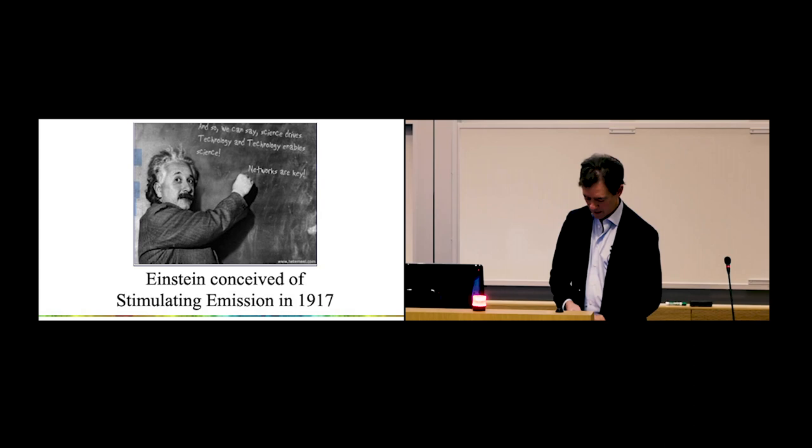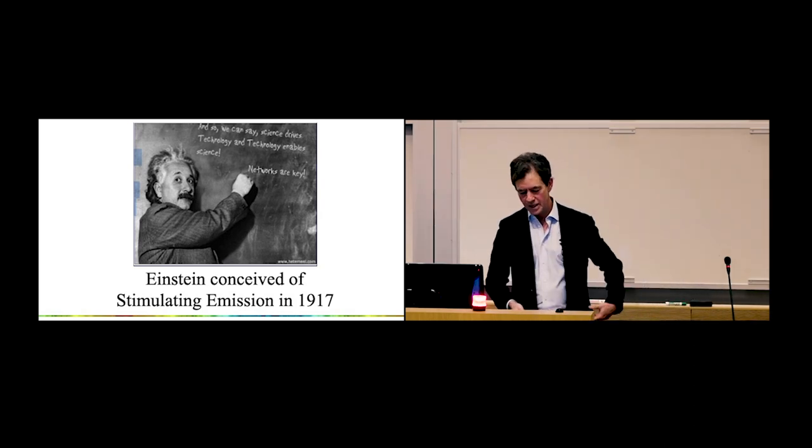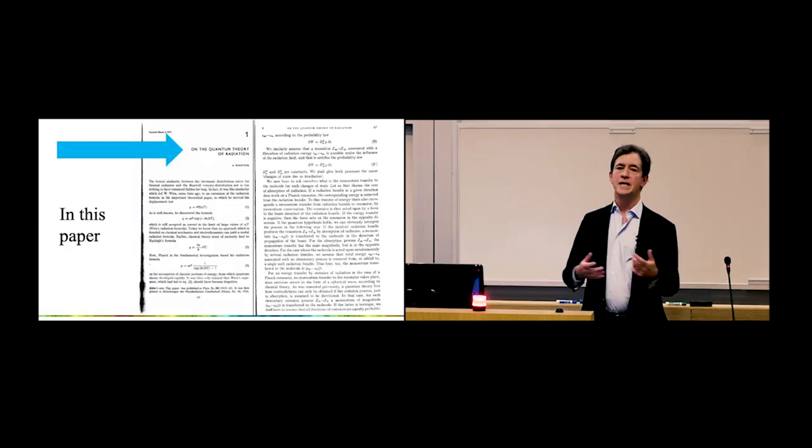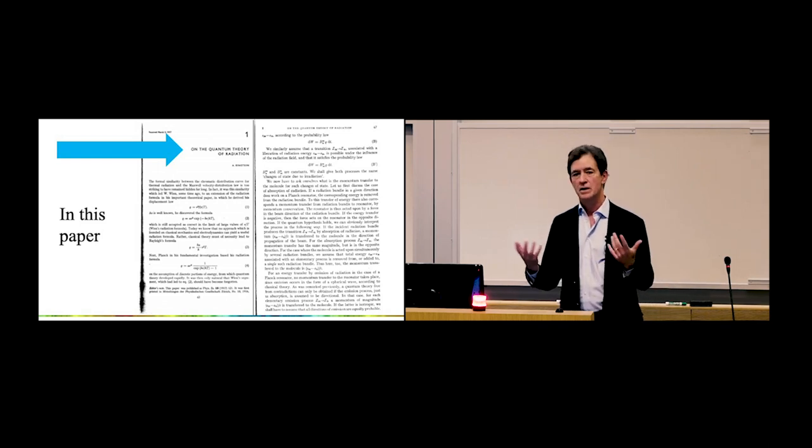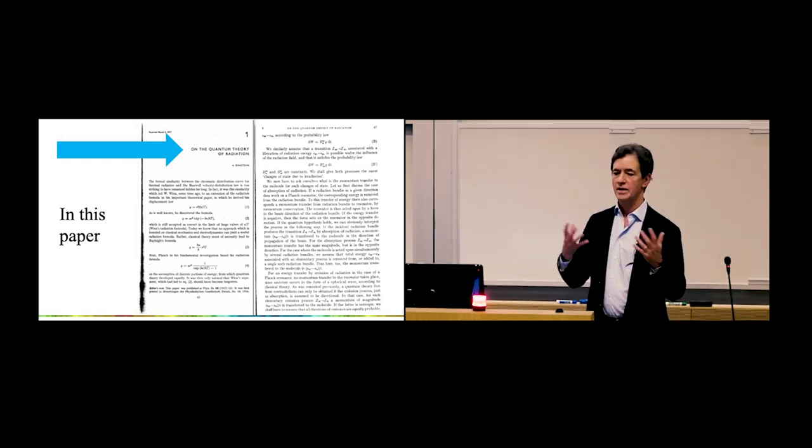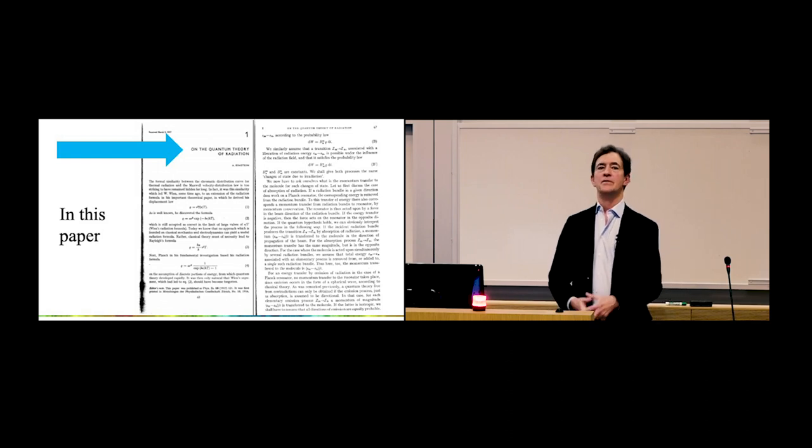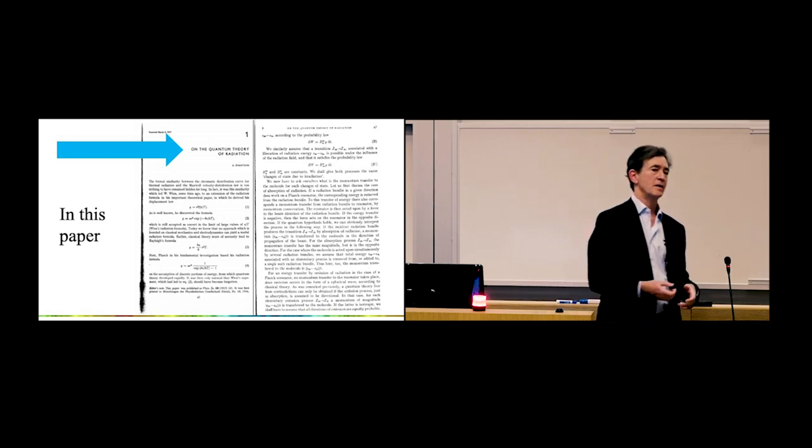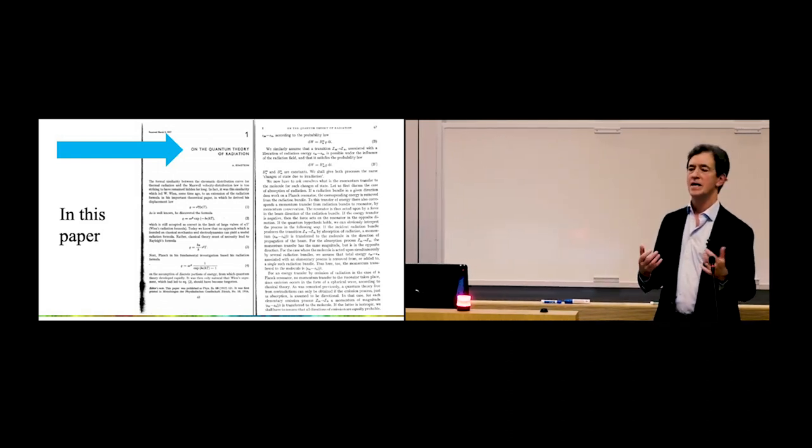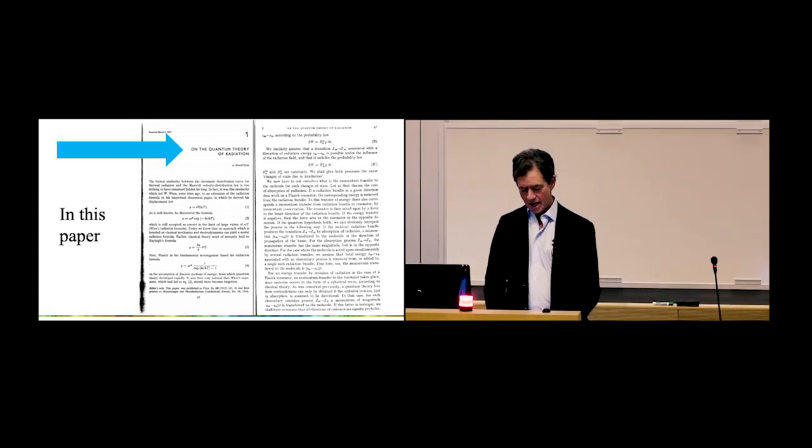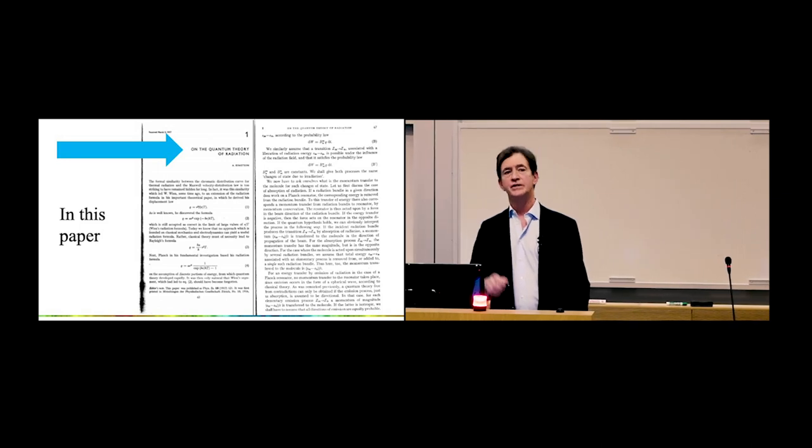Einstein explained in his article on the quantum theory of radiation the mechanisms for two forms of emission. One, the spontaneous emission of light that comes in a chaotic manner. It's the light you'll see from the sun with many different frequencies. In the second type of emission, he realized something astonishing because it does not exist anywhere in nature. It is something truly new under the sun. And that is how light could be created by the stimulated emission. It's an entirely man-made conception.